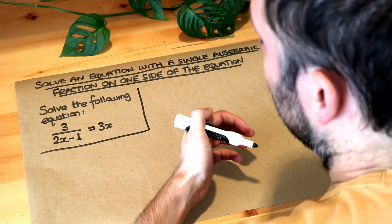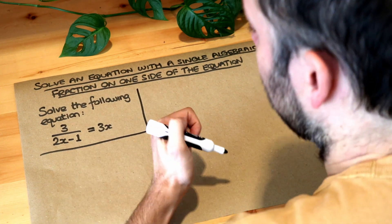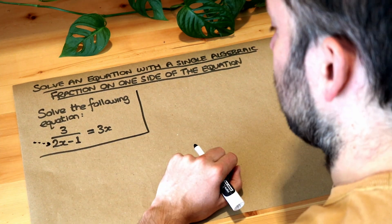Now our instinct is whenever we're trying to solve an equation with a fraction, we should get rid of fractions by multiplying through by the denominator of whatever fraction you have.